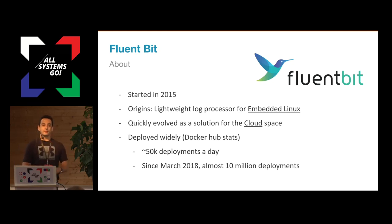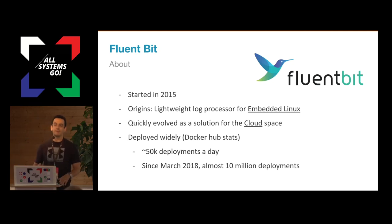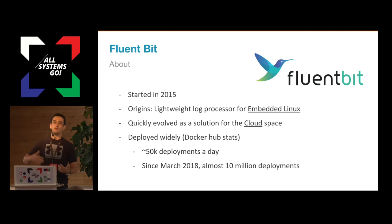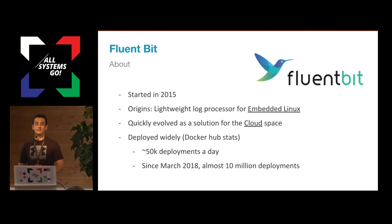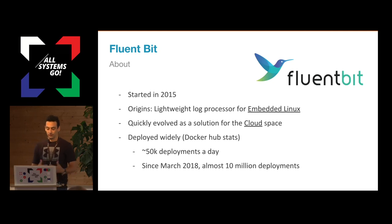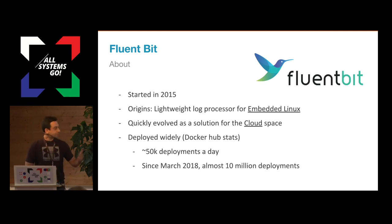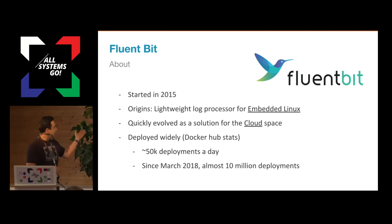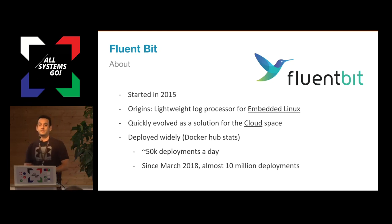People said: why can't we create something lightweight? Well, FluentBit was started for embedded Linux, but people from the cloud space who used FluentD or Logstash said: why don't you add these features to FluentBit? It's written in C, it uses like 500 kilobytes of memory, which is awesome. Of course, if you start processing thousands of messages your memory goes up, but it's still quite lightweight. After three years of work adding filters and many features, we now have around 50,000 deployments a day just from our own Docker Hub stats, and we're approaching 10 million since March.